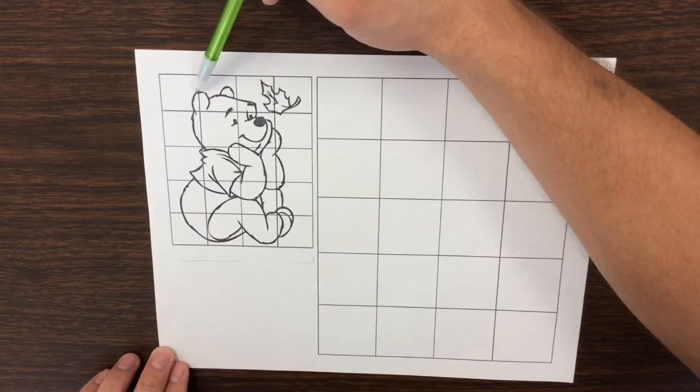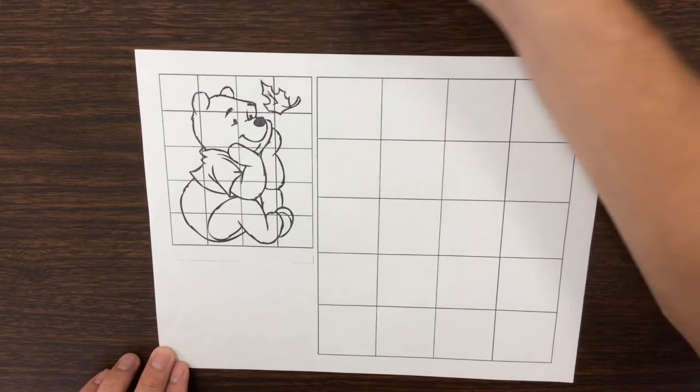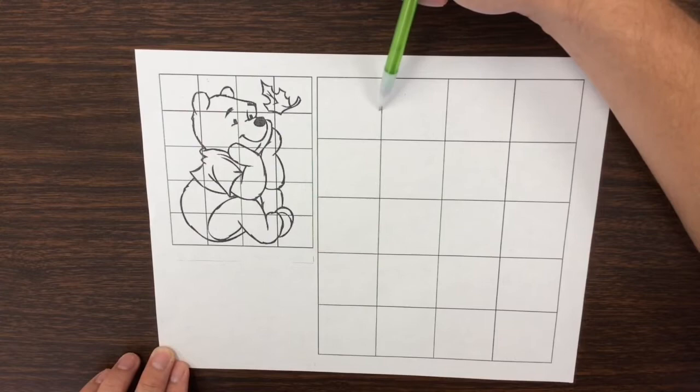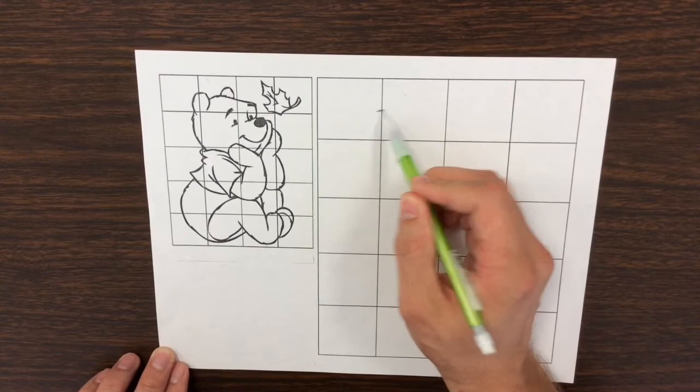This one's pretty obvious. It looks like it's right in the middle, in between here and here. So I'm going to come over to my other grid here where I draw, and I'm going to find roughly the middle, which is about right there. I know that that ear intersects right around the middle of that, so I'll make a mark right there.